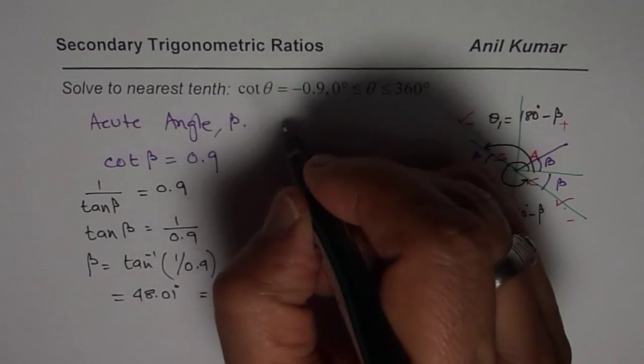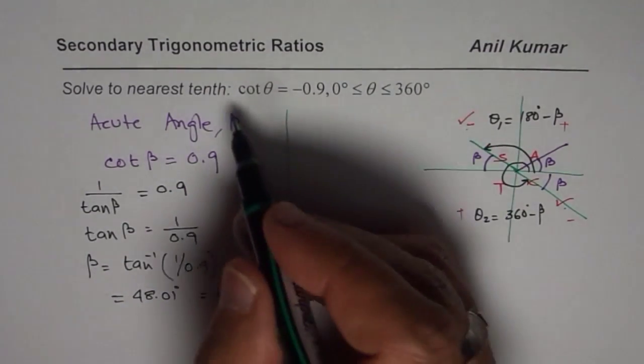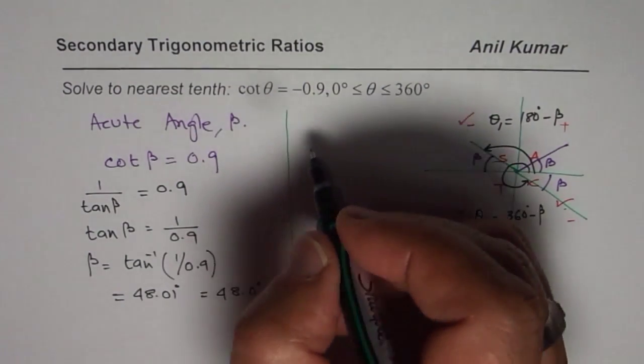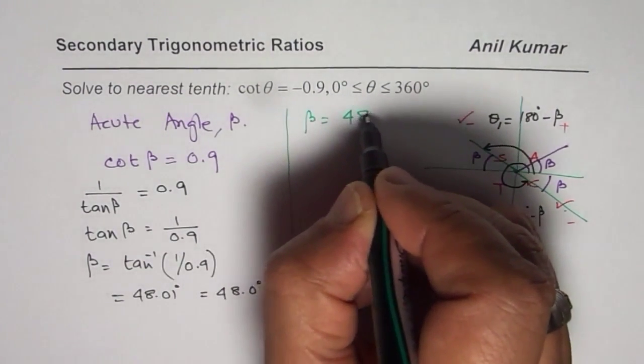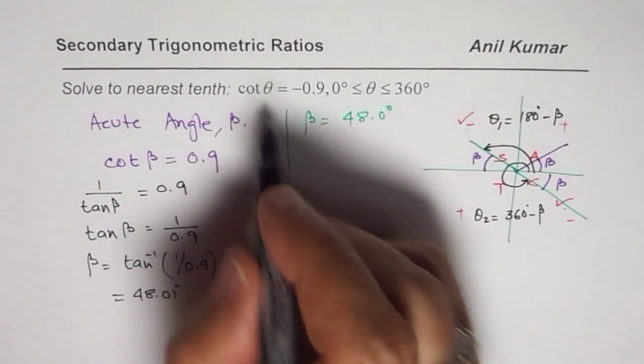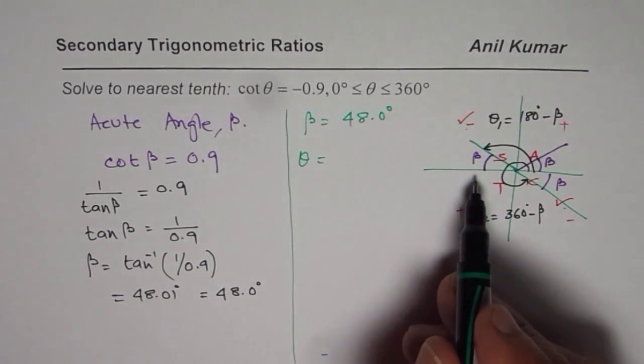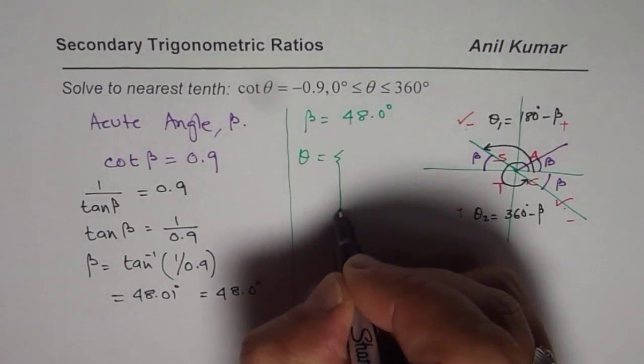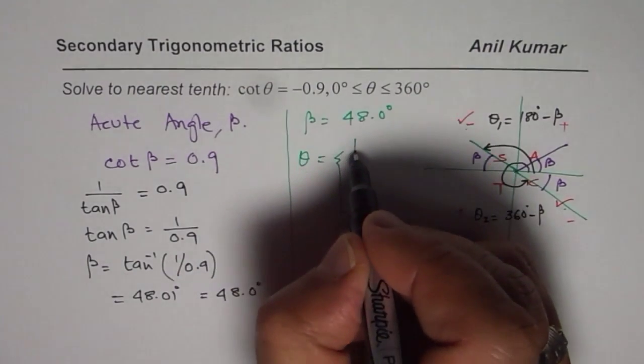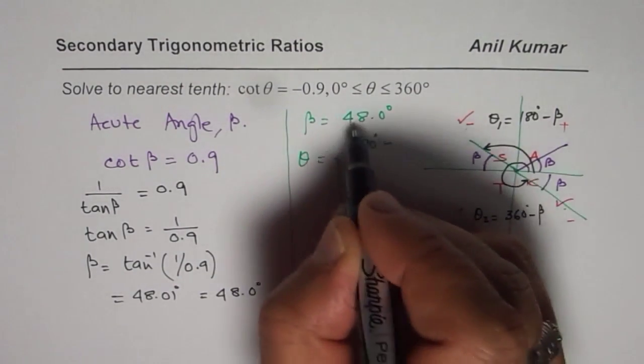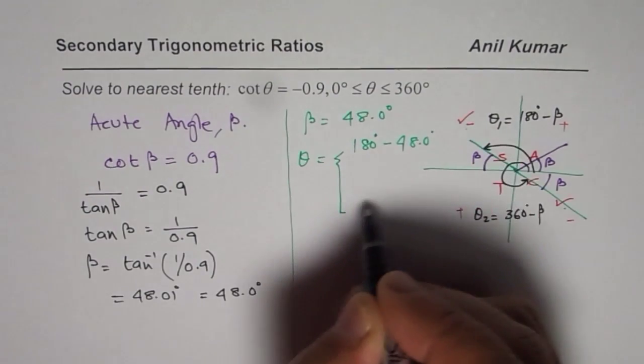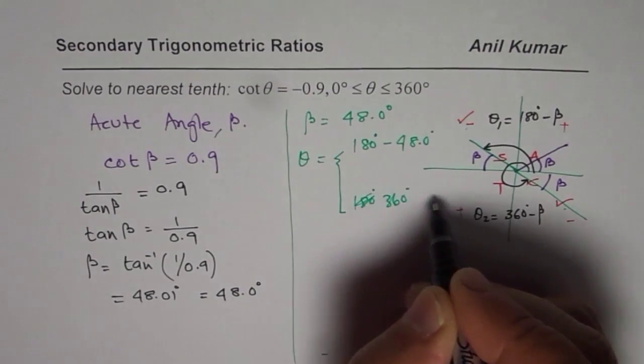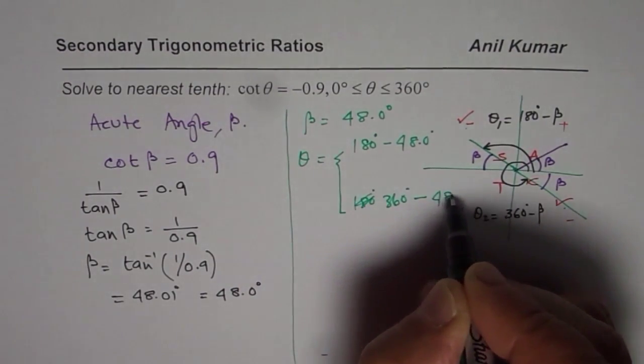Now let us find what θ is. We have found the angle. We know β, the acute angle is 48.0 degrees. Now we need to find what θ is. As we have seen here, θ could have two values. So one value of θ is 180 degrees minus the acute angle, 48.0 degrees. The other one is 360 degrees minus 48.0 degrees.